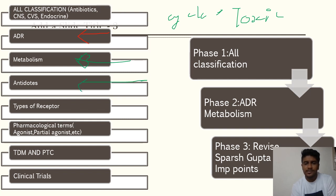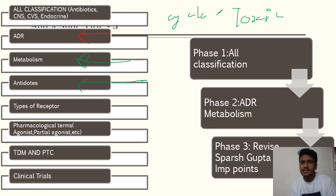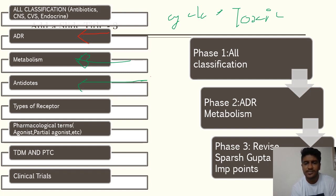Next are antidotes. Certain drugs have particular antidotes — for example, paracetamol's antidote is N-acetylcysteine, and arsenic's antidote is British Anti-Lewisite (dimercaprol). There are around 55 to 60 drugs whose antidotes you must know. A list is easily available on any online platform — just quickly go through it.